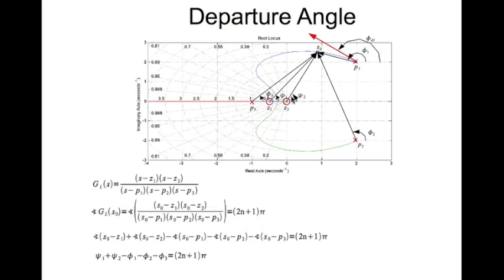And the corresponding angles psi 1, psi 2, phi 1, phi 2, phi 3 are the angles that these vectors make with the positive direction of the x-axis.